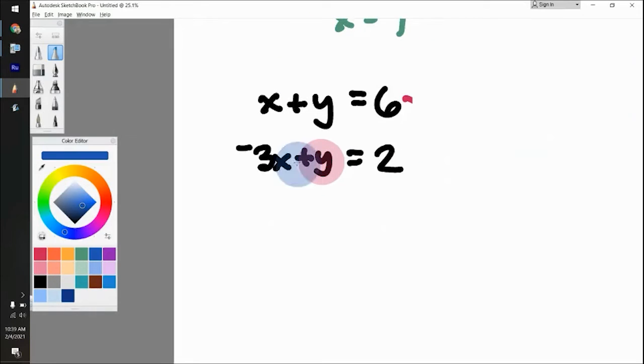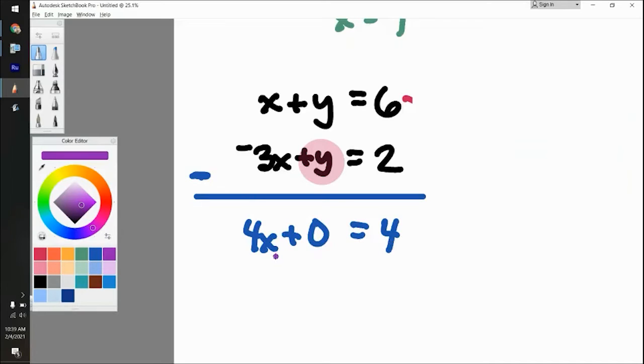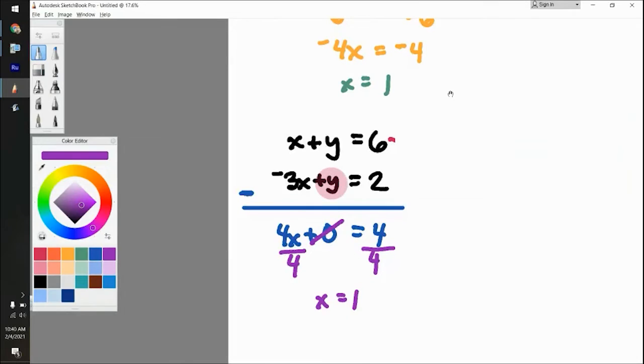So with elimination, what you do is if they line up in such a way that certain values match up, like y and y here, what you can do is just subtract going straight down for all of these. So six minus two is four. Y minus y is zero, so the y's are gone. X minus negative three is four x. Then what you can do is divide both sides by four, and you get x equals one. If you notice, we got one before as well for the x.